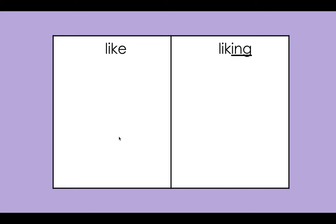We're gonna practice this. The first word you're gonna write is "close." Which side of the chart does the word "close" belong? "Close" belongs under "like" — it has a silent E at the end. Check it. Does your word look like my word? If not, fix it. "Close" — sometimes it's helpful to say the word slow and smooth as you write. Hear all the sounds: close.